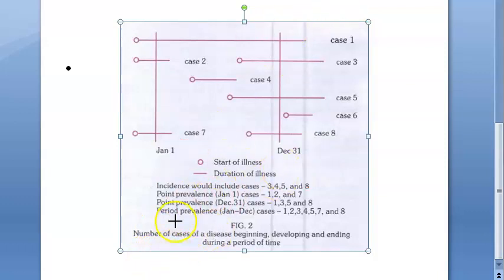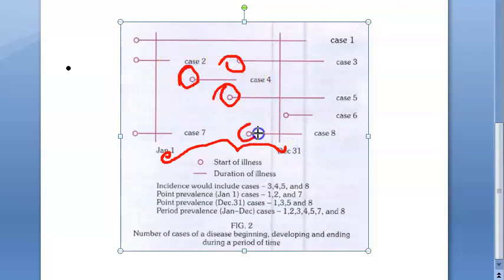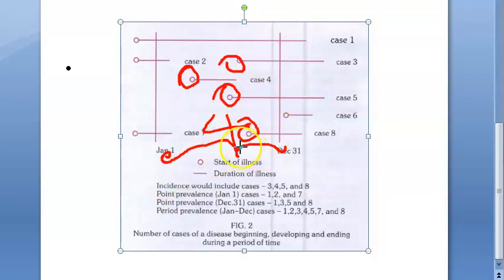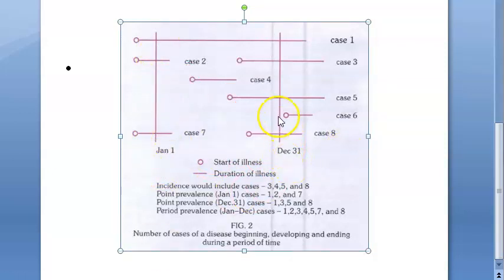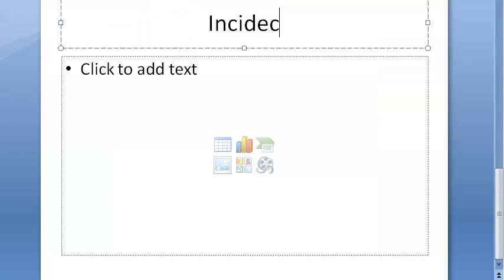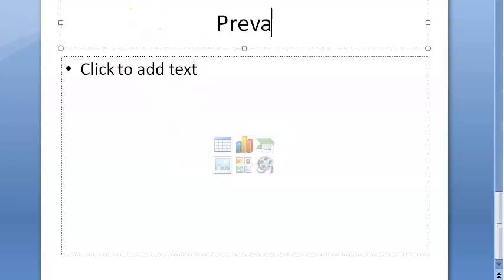What is incidence? Incidence is the new cases. From Jan 1st to December 31st, new cases: you have one new case here, one new case here, one new case here, one new case here — four new cases total. So the incidence would be four new cases. Point prevalence on Jan 1st: three cases. On December 31st: four cases.